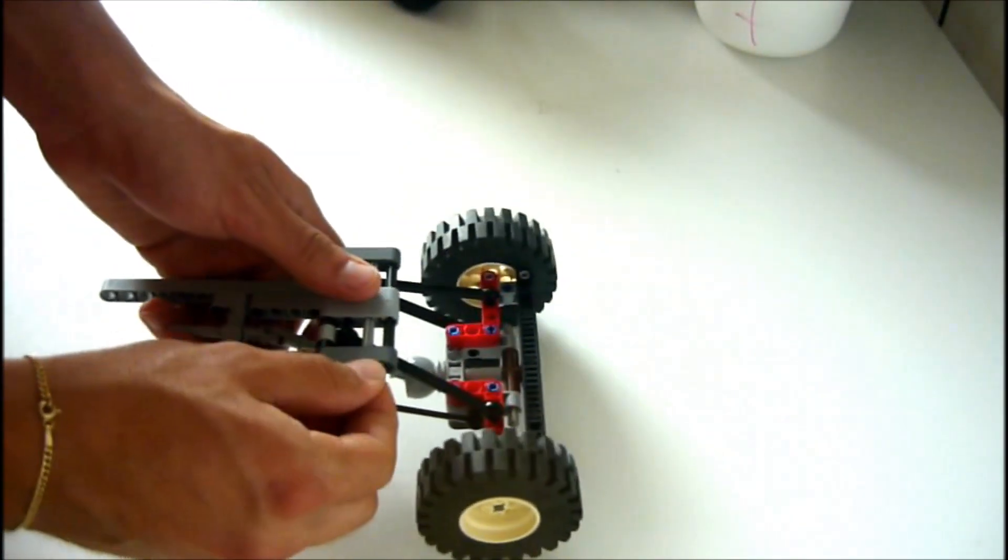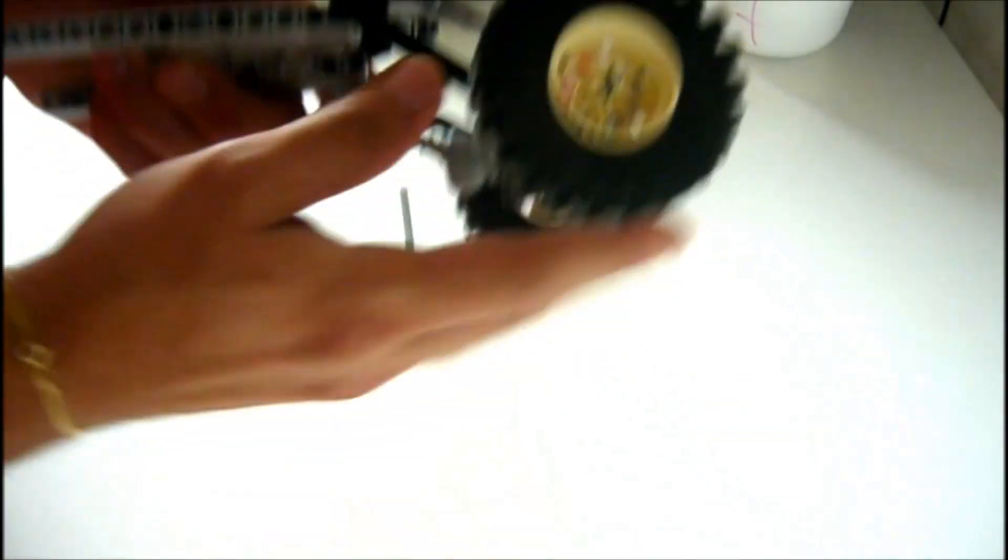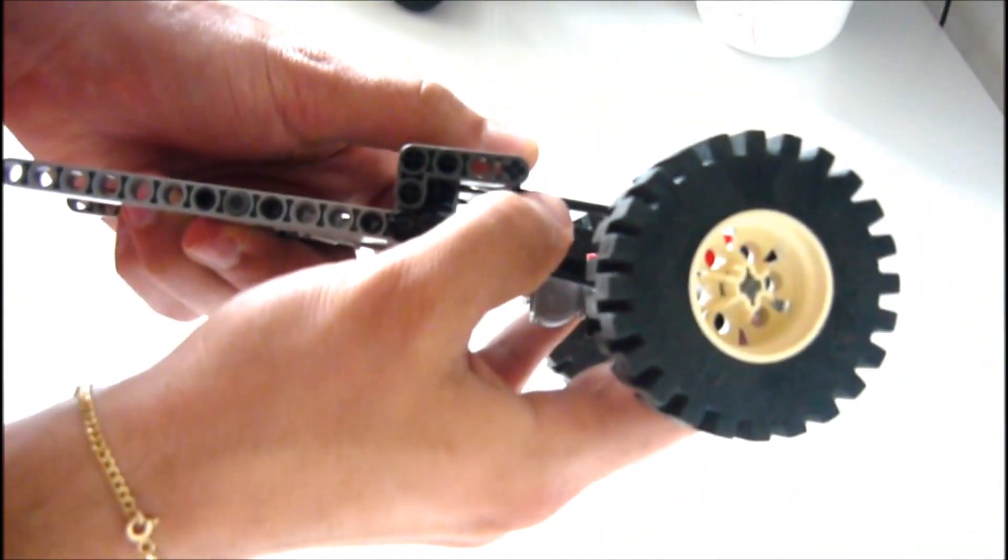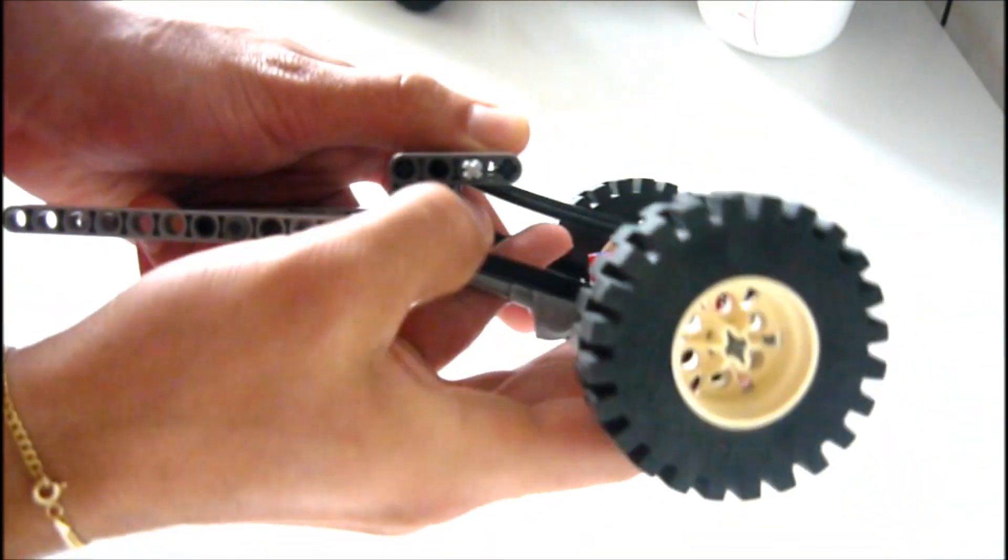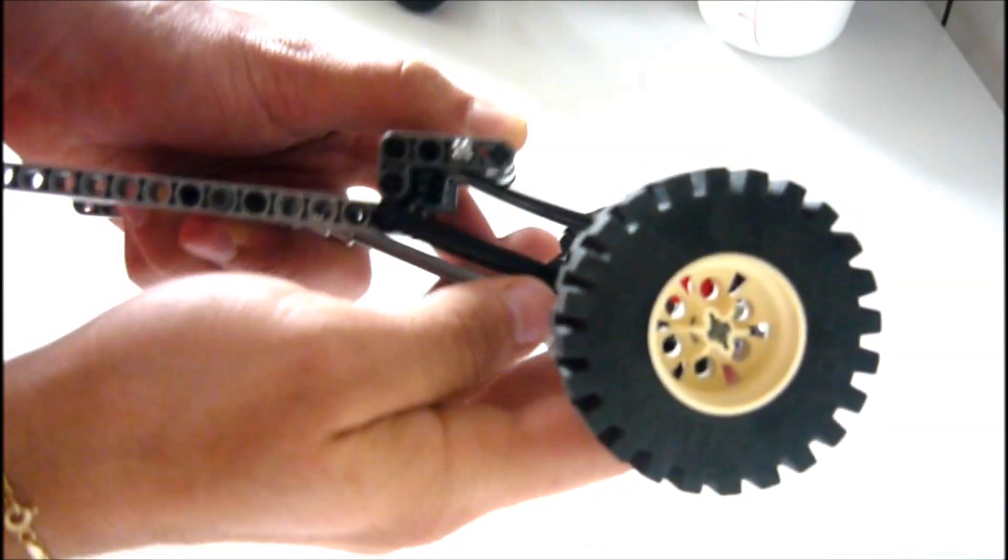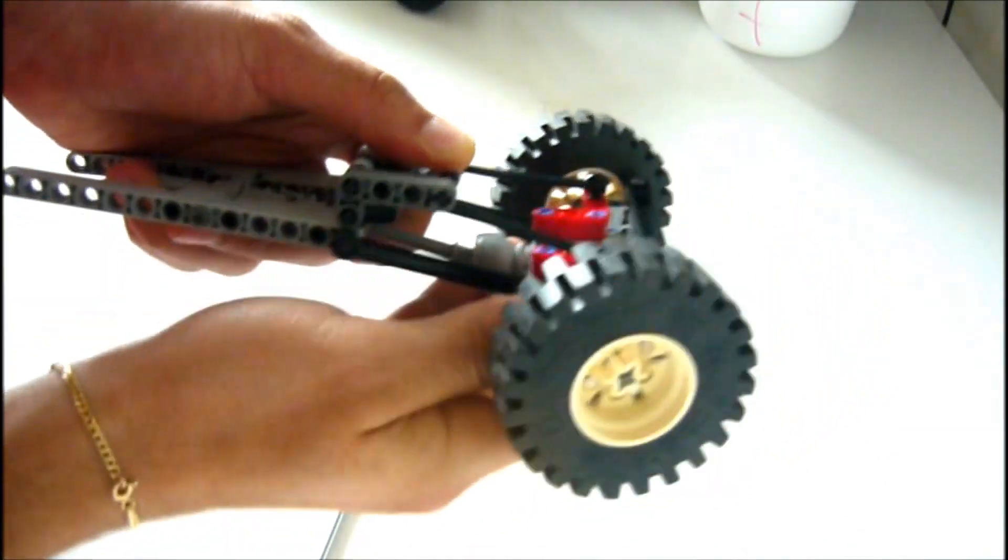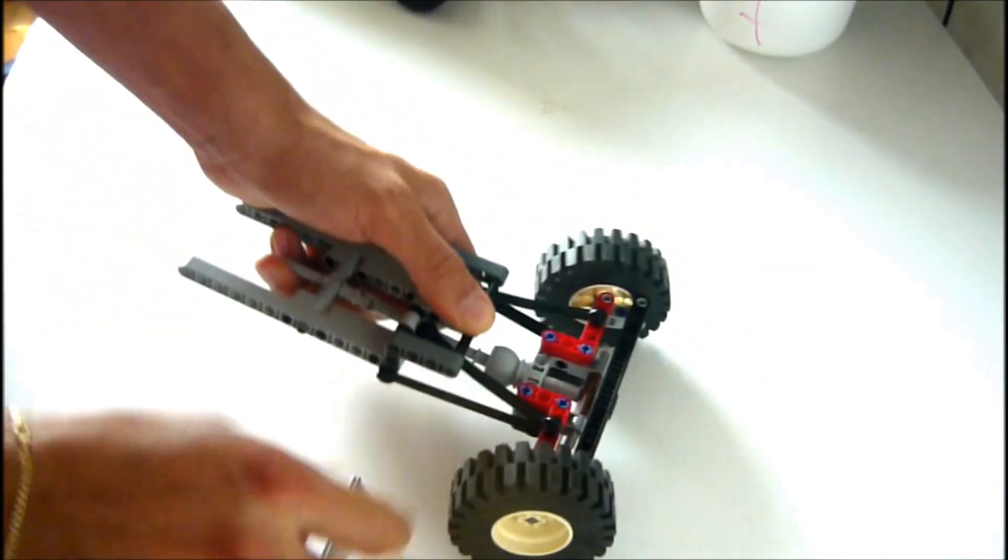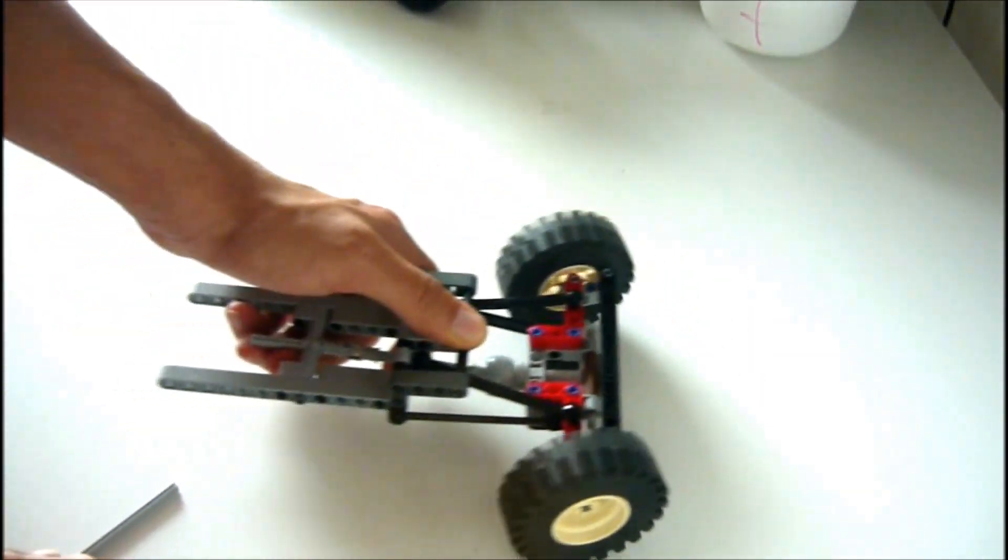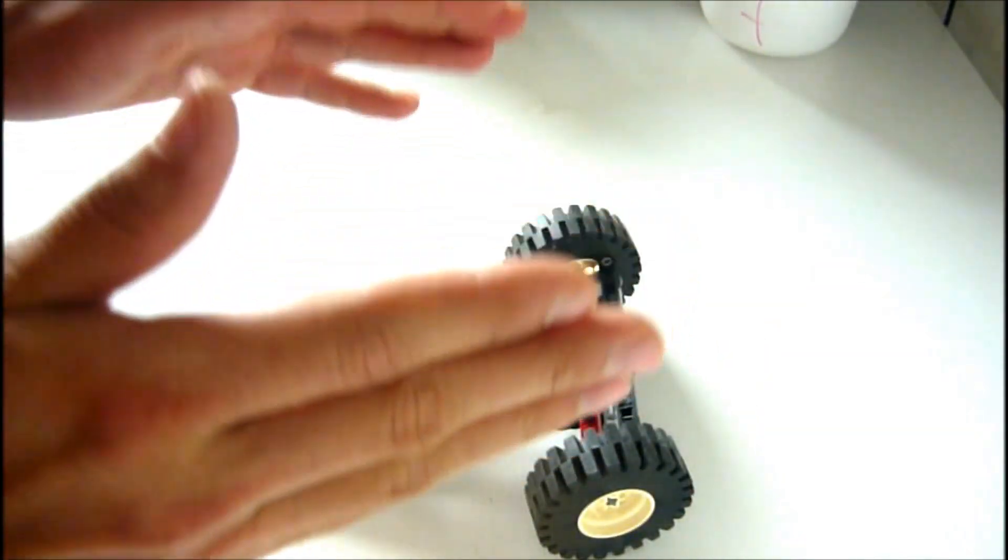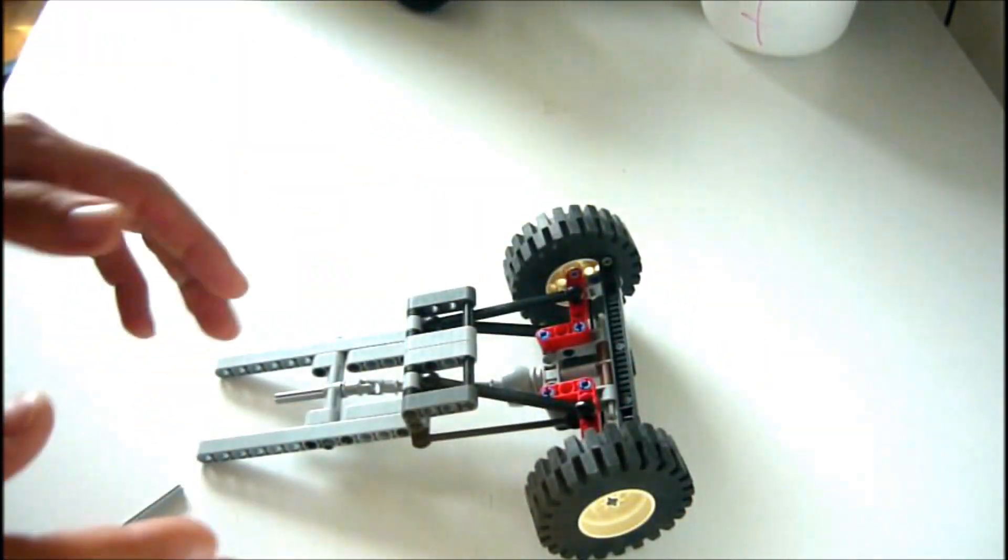You can make the axle harder by moving the point where the link touches the chassis. The closer the point to the actual attachment point, the softer the suspension. The further away, the harder the suspension, and you can also easily adjust the side stiffness for the machine.